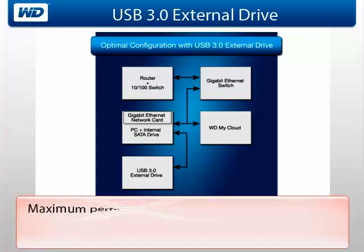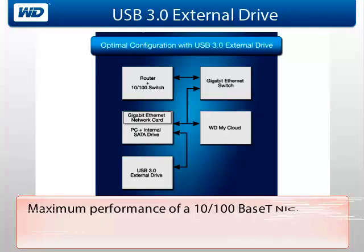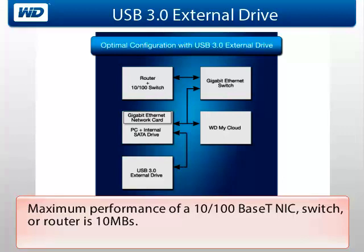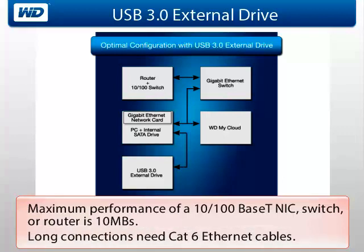The maximum performance with a 10/100 base-T network interface card, switch, or router in the datapath is about 10 megabytes per second or less. Also, CAT 6 ethernet cables are preferred for long connections.